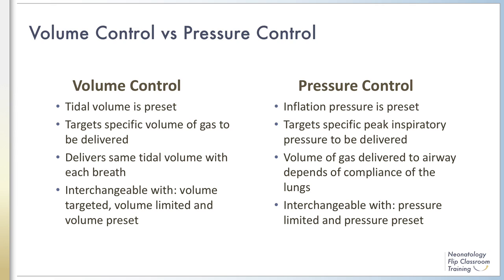In volume control ventilation, the tidal volume is set — a specific volume of gas to be delivered is targeted, and the same tidal volume is delivered with each breath. The pressure required to deliver the set tidal volume varies. In pressure control ventilation, the inflation pressure is preset, targeting a specific peak inspiratory pressure to be delivered.